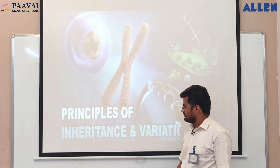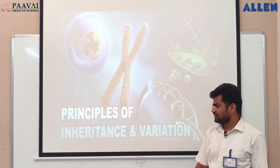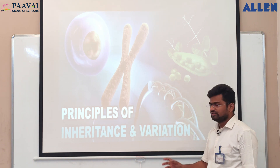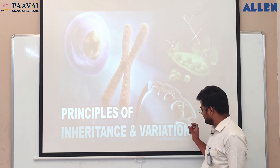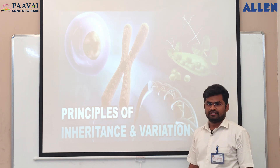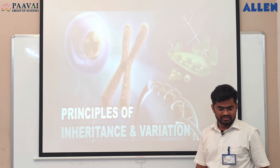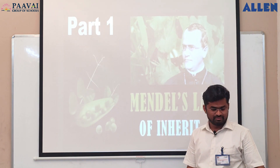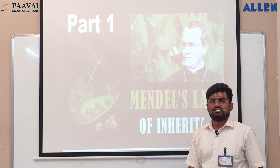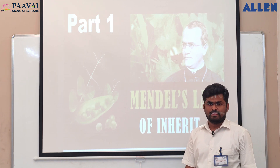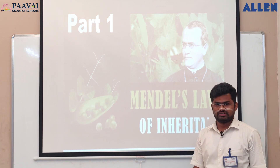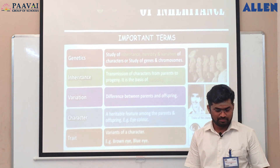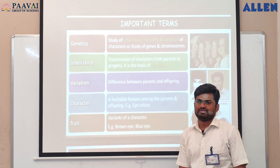Inheritance is the process of transfer of characters from one generation to another generation. Variation is the differences between two organisms because of the mode of reproduction. Reproductions are of two types: asexual reproduction and sexual reproduction. You already studied about both processes, but slight differences will occur because of the involvement of two gametes, especially in sexual reproduction.